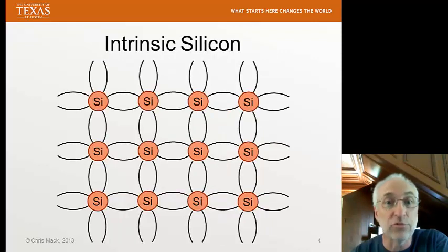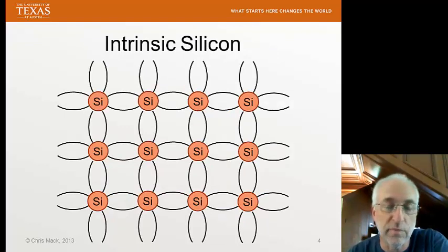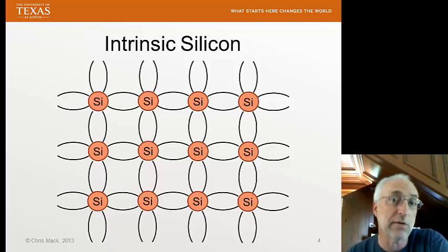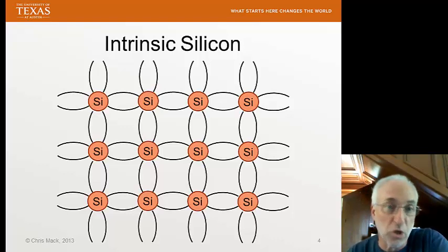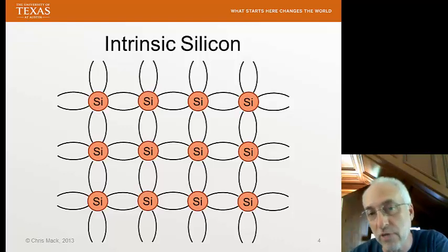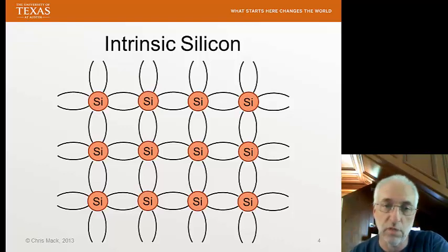Let's take a look at intrinsic silicon, which is made up of a group 4 material. Silicon, in our example, silicon has four electrons in its outer shell. It forms bonds with four other silicons in a tetrahedral structure. Here we show it in just a flat representation, but each silicon is bonded to four others, sharing an electron so that every silicon in the crystal structure has 8 electrons around it in a stable configuration.